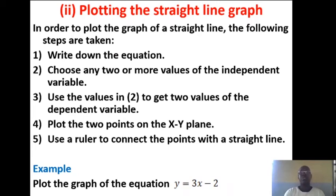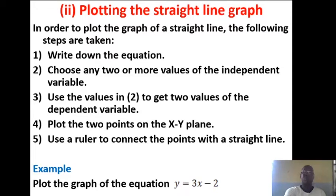How do we plot a straight line graph? There is a simpler way of plotting the graph of a straight line or even sketching it. In order to plot the graph of a straight line, the following steps need to be taken: write down the equation as given to you, then choose any two or more values of the independent variable — the X variable. Y becomes the dependent variable since the values of Y depend on what values X is taking. Then use those values to get the values of the dependent variable, plot two points on the XY plane, and use your ruler to connect them.